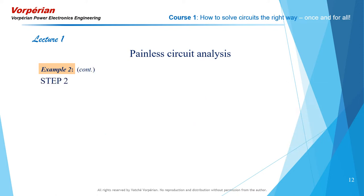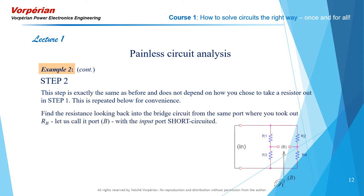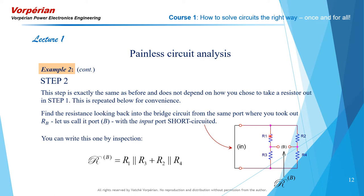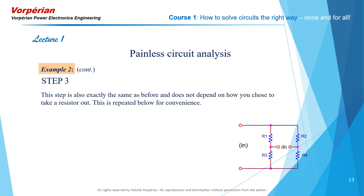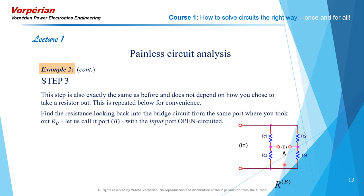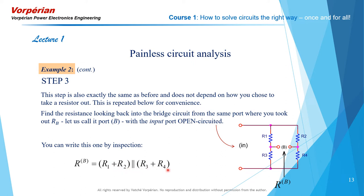Steps 2 and 3 are identically the same as before. In step 2, we determine the resistance looking back into the network from port B while the input port is short-circuited. It doesn't matter whether you take out Rb as a short or an open — this step is identically the same, because you are looking back into the circuit from that port where it was connected. By inspection, that is R1 parallel R3 in series with R2 parallel R4. Step 3: look back into the network from port B with the input port open — what we called Roman R super B — and that is R1 plus R2 in parallel with R3 plus R4.